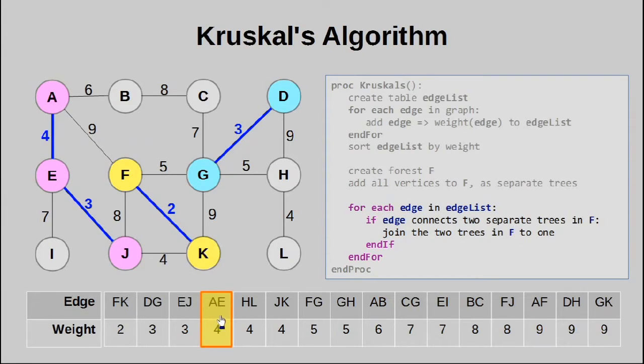So we move on once again to HL, that is this edge here. We connect them into their own tree. Then J and K, this edge here. Notice what has just happened. We've actually connected two trees together.